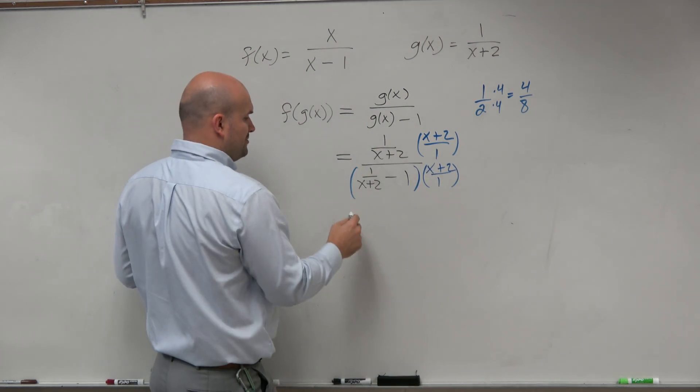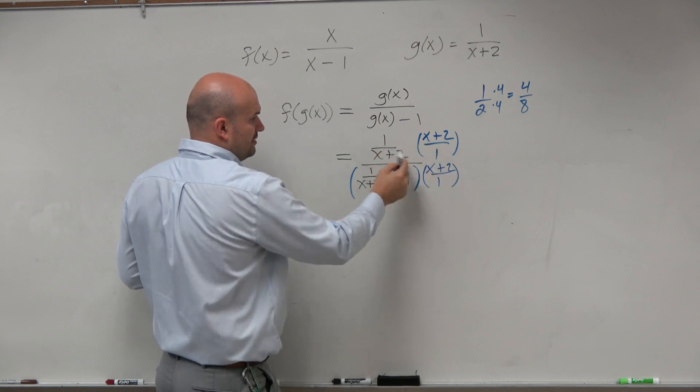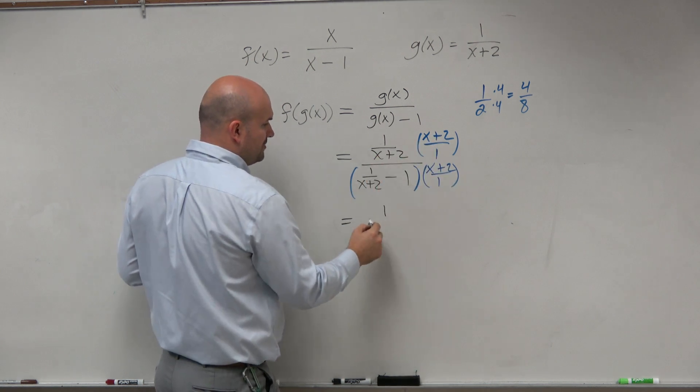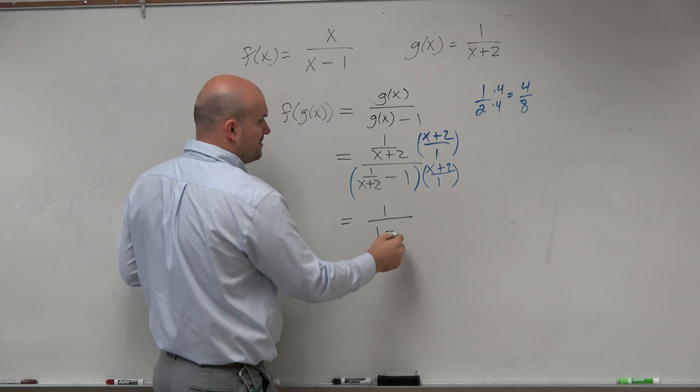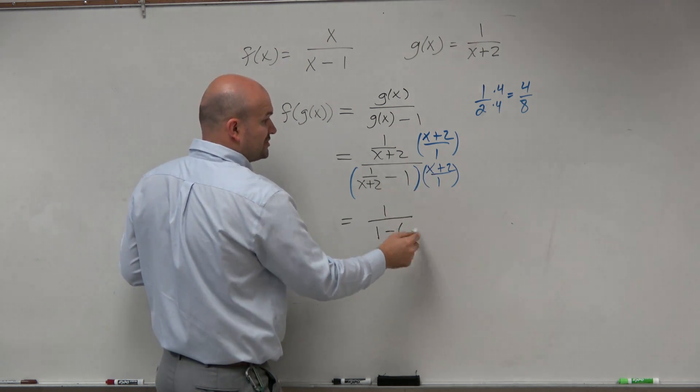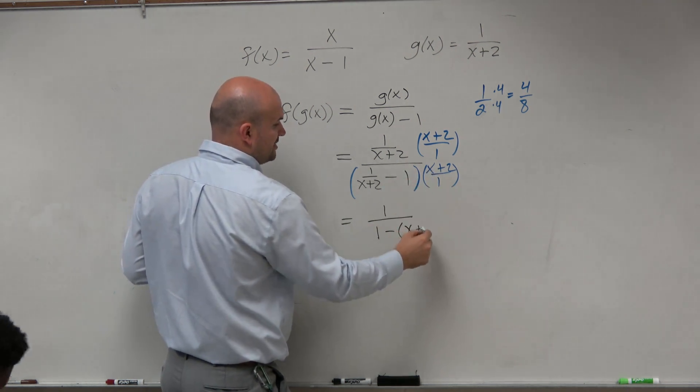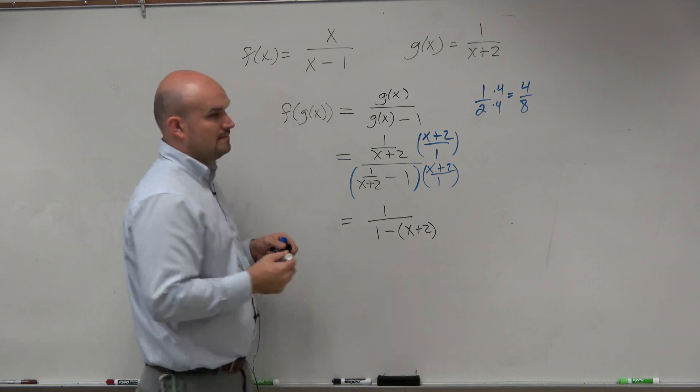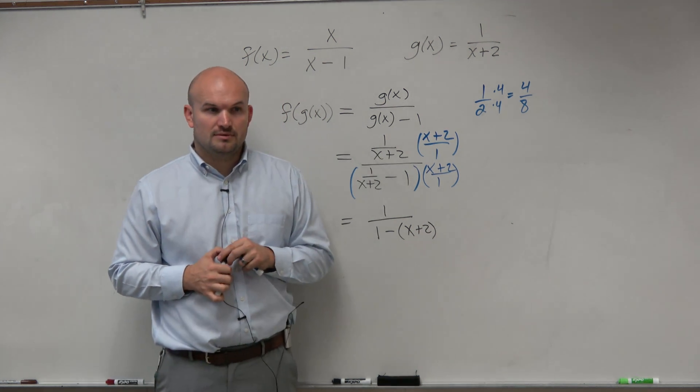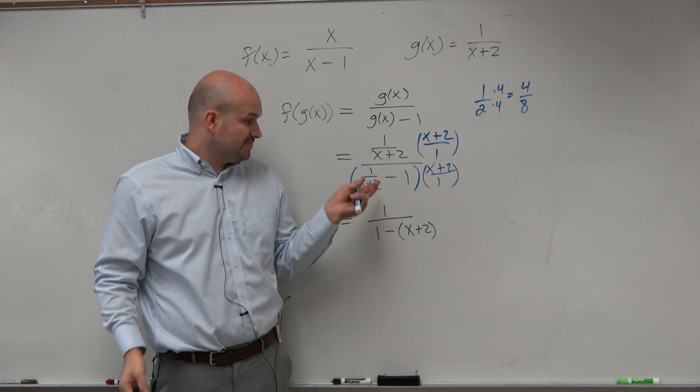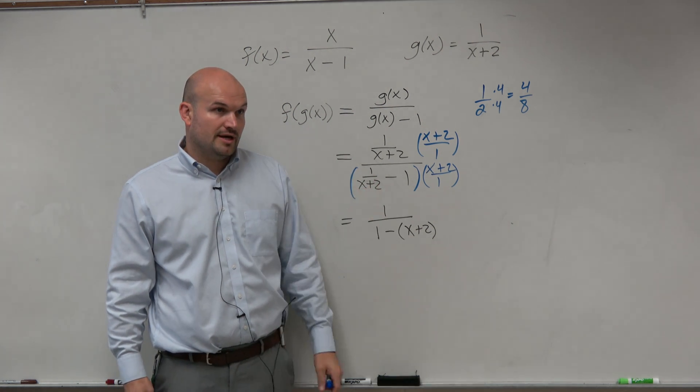So when I distribute in the numerator, this actually gives me just 1, this gives me 1, and then minus, make sure you include parentheses, x plus 2. Okay. So again, multiplying by reciprocal gets rid of that denominator. Okay.